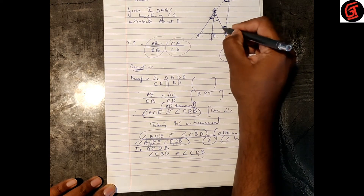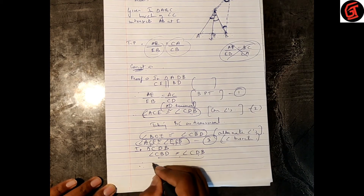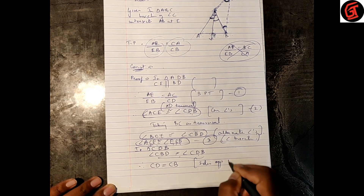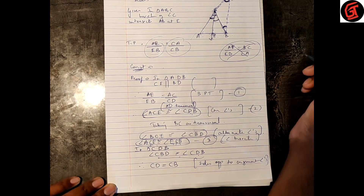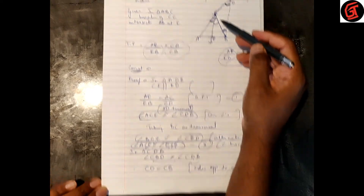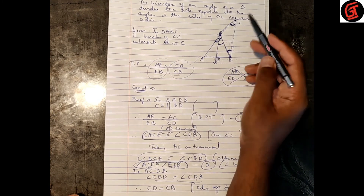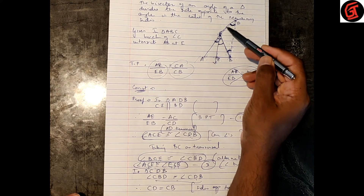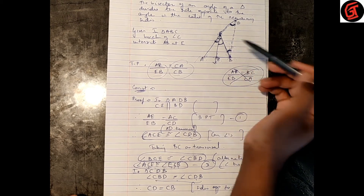Since angle CBD is congruent to angle CDB, by the Isosceles Triangle Theorem — if two angles of a triangle are congruent, the sides opposite to them are also congruent — therefore CD is equal to CB. The side opposite angle CBD is CD, and the side opposite angle CDB is CB, so these two sides are congruent.